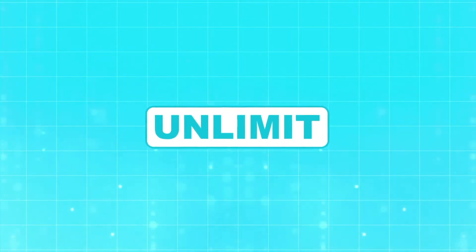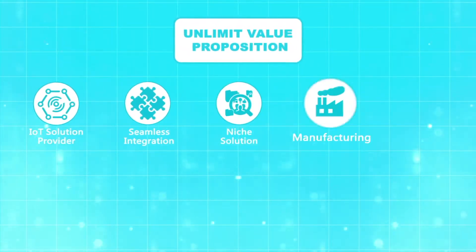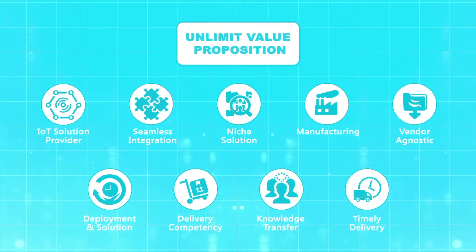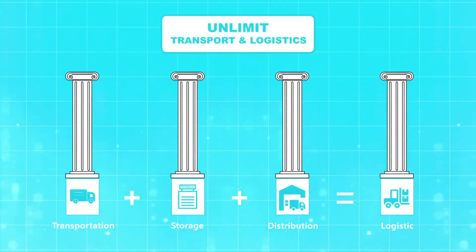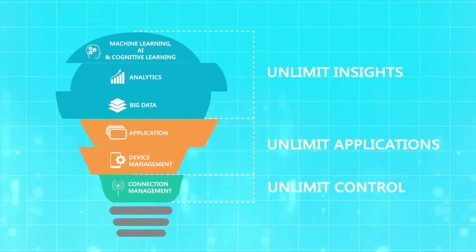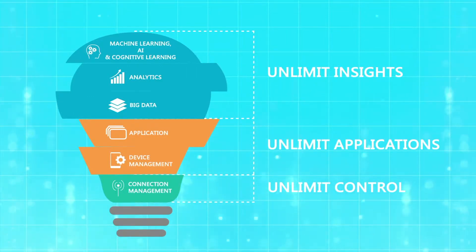Unlimit helps you in understanding what current leaders are doing by highlighting the areas that current industry leaders are focusing on. The Transport and Logistics Industry consists of four major pillars. Introducing Unlimit's suite of offerings for the transport and logistics sector, which consists of three unique building blocks: Unlimit Control, Unlimit Applications, and Unlimit Insights.